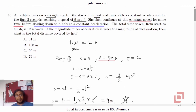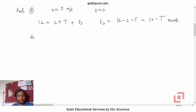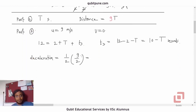We also have some other information. The magnitude of her acceleration is twice the magnitude of deceleration. The magnitude of acceleration is 9/2 meters per second squared, so the deceleration will be half of that, which is 9/4 meters per second squared.